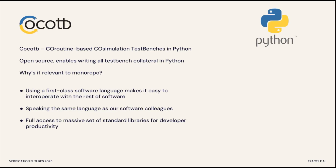The second tool I want to talk about is CocoaTB, which has been mentioned a lot today already. It pretty much enables you to write all your testbench collateral just in Python. Why am I talking about this in relation to the monorepo? The main advantage of using Python for your testbench code is it enables you to seamlessly interoperate with the software team. Using a first-class language puts you in the same sphere as the software guys, and importing code from them becomes trivially easy, unlike using SystemVerilog DPI calls. And you get full access to the massive standard libraries.